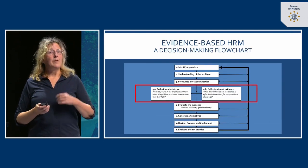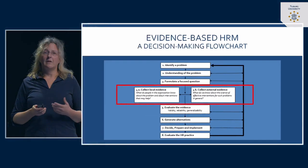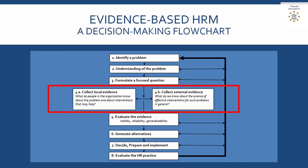The governmental organization posed the following question for the evidence-based HRM project: 'How can the work design be improved to reduce the reported stress symptoms and sickness absenteeism by employees of the customer care department of this governmental organization?' Once you have a question, your task is to understand the causes of the problem and what we know about how those causes relate to the outcome you want to improve, and how this translates into work design practices. We need two sources of evidence: local evidence and external evidence.